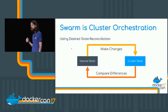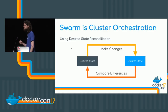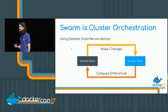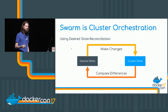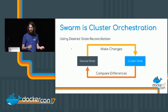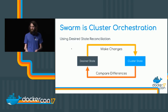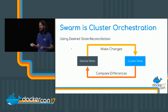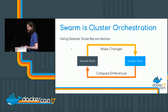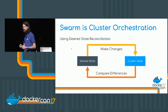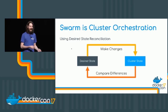We use a technique called desired state reconciliation. Swarm looks at the actual state of your cluster and compares it to the desired state as defined in the service spec. When you create a service and ask for three replicas, Swarm sees there are no containers running and starts those three containers. Now the desired state and actual state are reconciled. If a container or node goes down, Swarm sees that deviation and adds a new one.